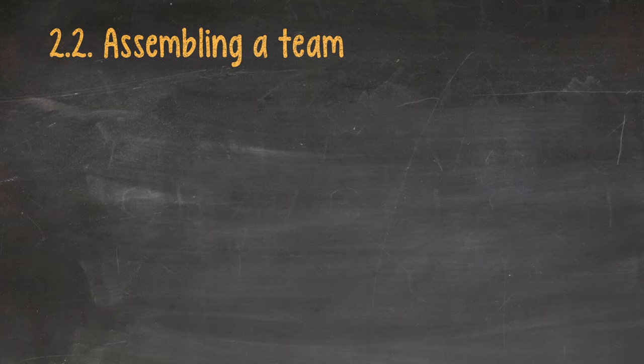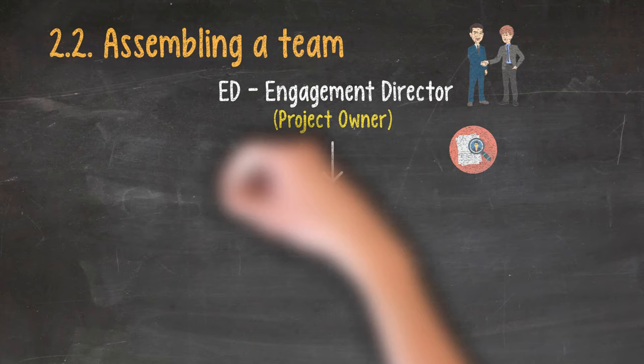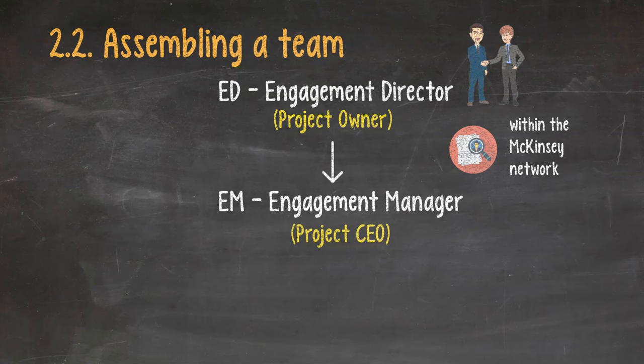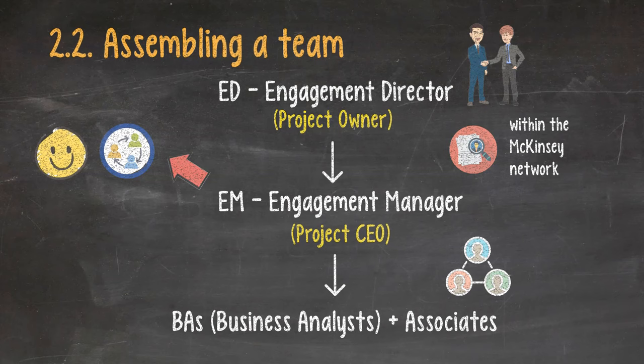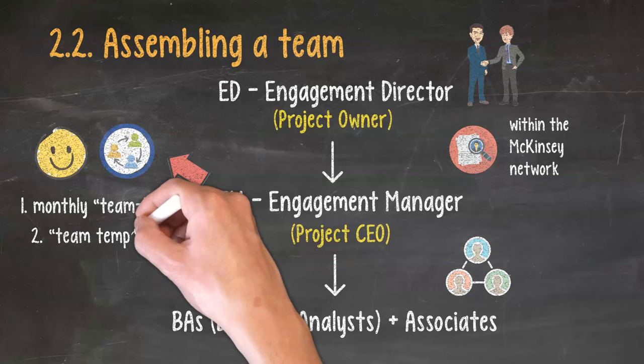2.2. Assembling a team. Almost all projects need a full-time team of consultants. Typically, the process goes like this. The ED, aka the project owner, signs a contract with the client. The ED hires an EM from within the McKinsey network from any of the offices, aka the project CEO. The EM then hires a group of staff consisting of BAs, aka business analysts, and associates. It's solely the EM's responsibility to keep the team happy and functional. McKinsey projects have a few common practices to do so. Number one is the monthly team bonding. Number two is team temperature, aka morale, weekly survey.